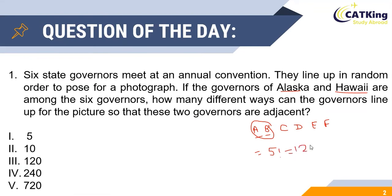Now within this single compound entity made up of the governors of Alaska and Hawaii, they can be arranged in two ways: either A, B or B, A. So the total number of ways in which the governors can line up so that these two governors are always adjacent is equal to 5 factorial into 2 factorial, that is 120 into 2, giving us an answer of 240. Thus making option 4 the correct answer.